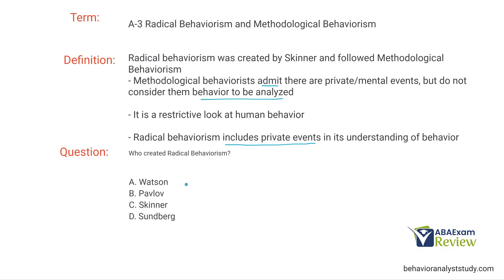The question: who created radical behaviorism? A and B — Watson and Pavlov — we think of respondent conditioning, classical conditioning. Watson had the Little Albert experiment; Pavlov had his dog. C, Skinner — Skinner is our radical behaviorist creator. And then Sundberg, who is a very well-known researcher in verbal behavior, but he did not create radical behaviorism. So Skinner is the one who included private events in our understanding of behavior and created radical behaviorism.